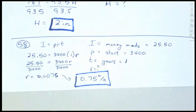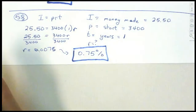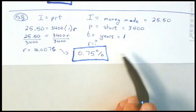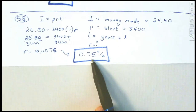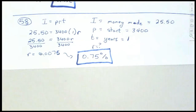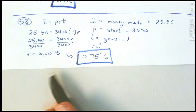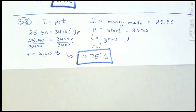We didn't make much money because our percentage is so small — that's what happens when you invest in a bank CD. They don't pay much, but it's guaranteed money. If you have a credit card, it might be 20-25% in that range. With a CD, you're not going to get a lot — that's why we only made $25.50.